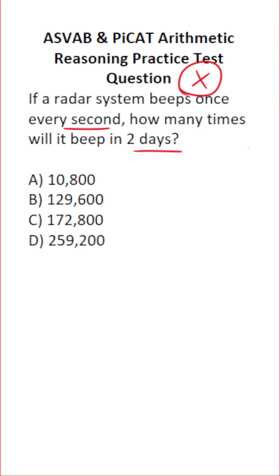But in this case, let's get started by converting seconds to minutes. Again, there are 60 seconds in every minute. And if this radar system beeps every second, that means it's going to beep 60 times every minute.